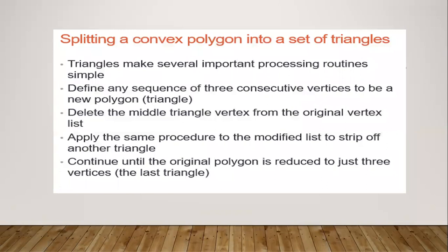The next topic is splitting a convex polygon. A convex polygon can be split by dividing it into a set of triangles. The basic concept is to define any sequence of three consecutive vertices in a given convex polygon to define a new polygon which is a triangle. Then delete that middle vertex from the original vertex list, and apply the same procedure to the modified list to strip off another triangle.